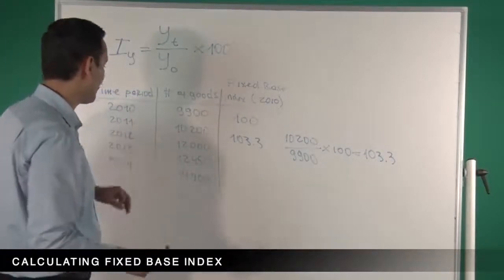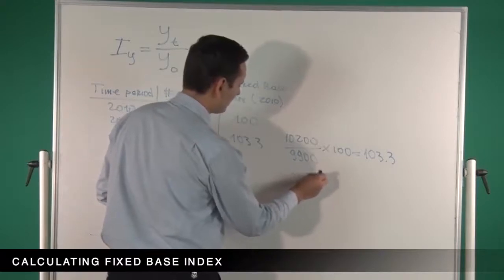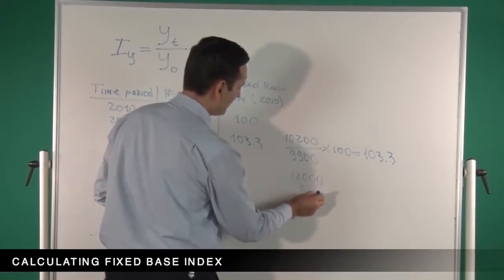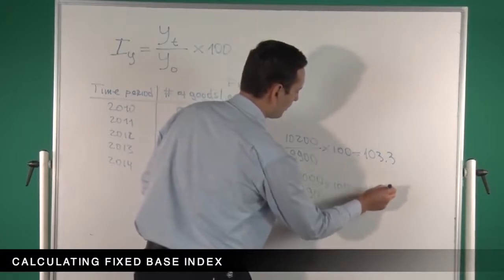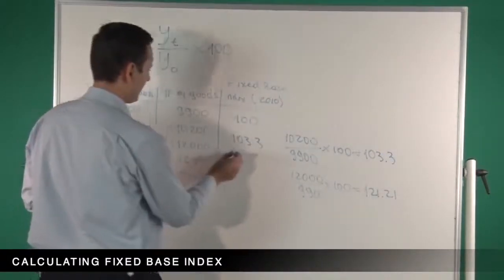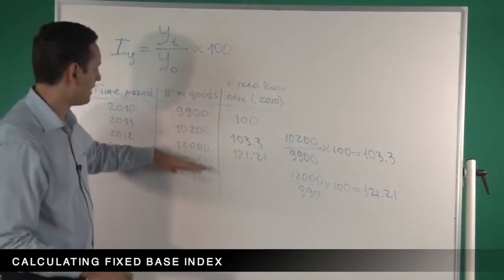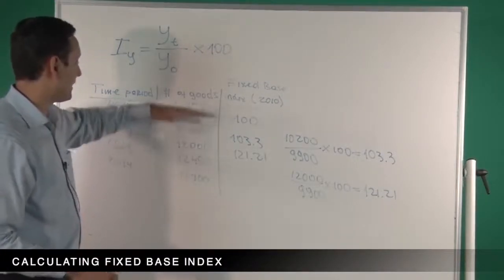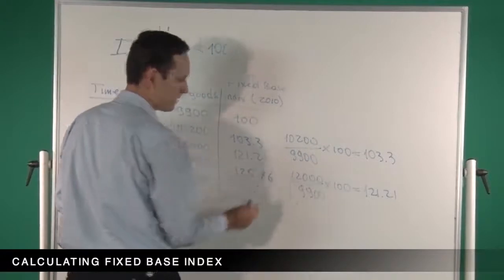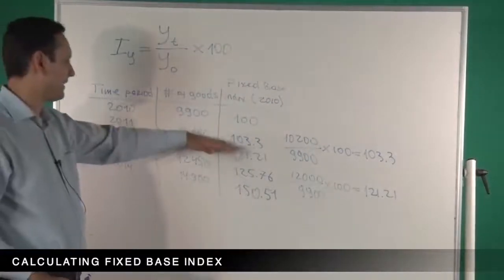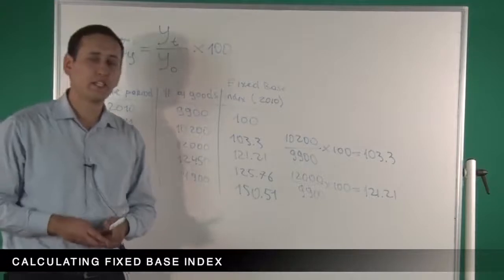For the next one, we do the same thing and we do not change the base. So basically 12,000 divided by, again, 9,900 multiplied by 100, and we're going to get 121.21. And for the rest of the years, we do the same — we divide each current number by the base year, which is 9,900. So we have calculated the fixed base index for these five years, making the base year 2010.